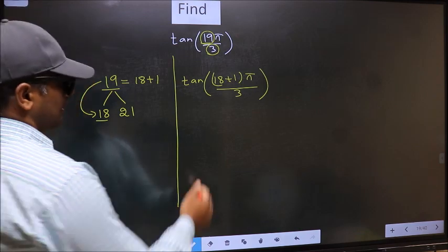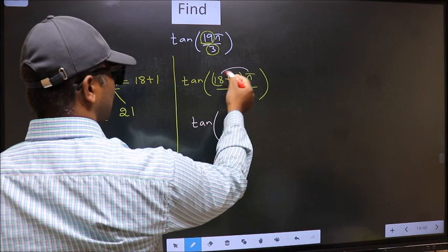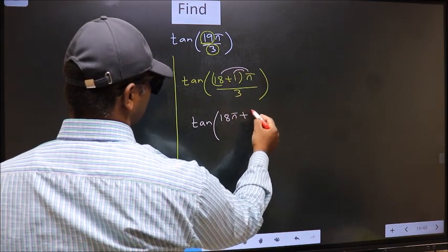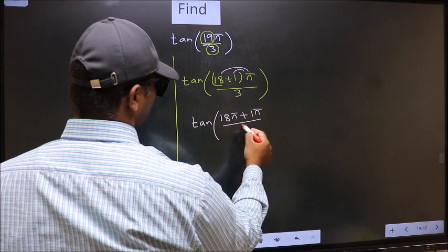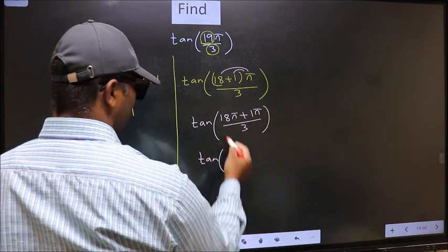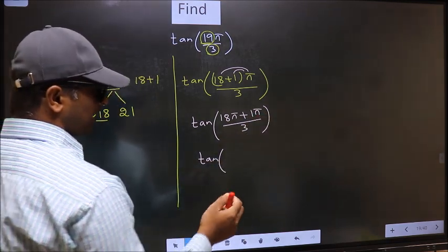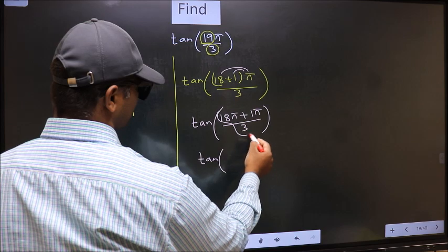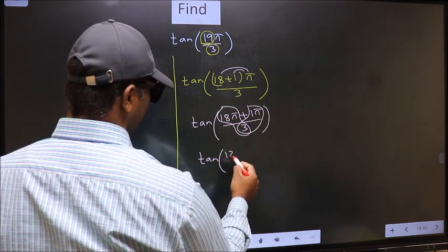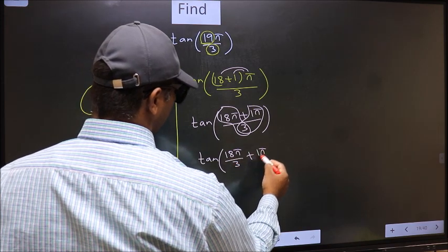Next, you should open the brackets. We get tan(18π + 1π)/3. We should split the denominator in this way: 18π/3 plus 1π/3.